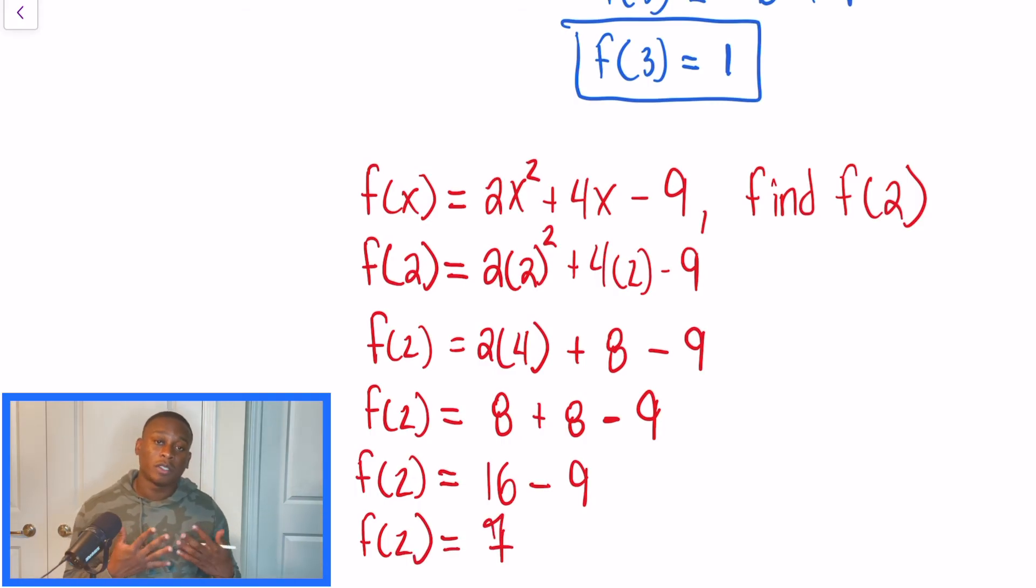So before we wrap this up today, some very important things. When we're evaluating functions, you're going to see f of x, g of x, h of x. But it's just notation, it's the same thing as y. Also remember that the independent variable is our x, dependent variable is our y. And when we're talking about domain and range, domain is the set of all values, the set of all input values, so the domain is our x. And when we talk about range, the range is the list of outputs, the set of outputs for the function.